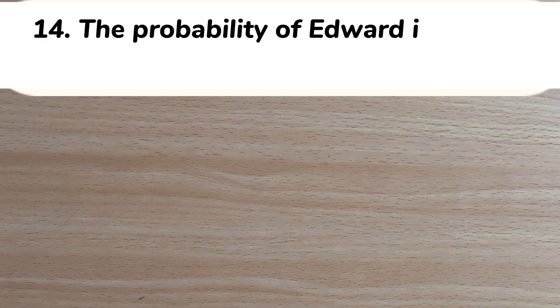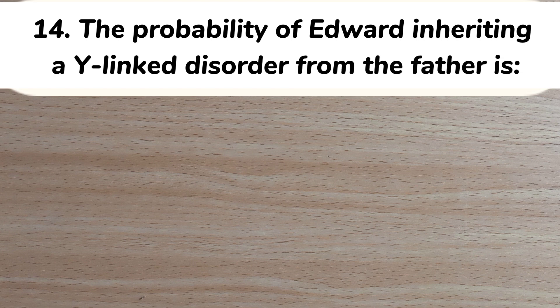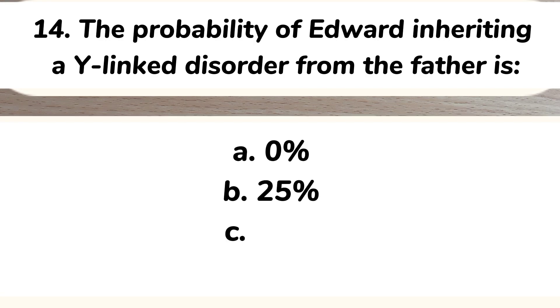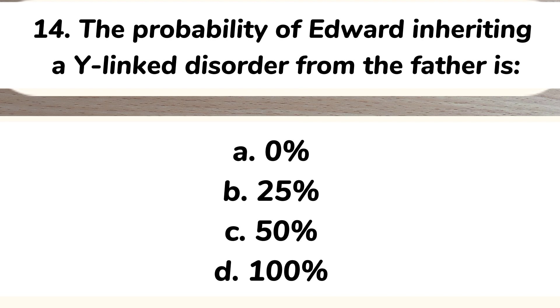Number fourteen: the probability of Edward inheriting a Y-linked disorder from his father is A) 0%, B) 25%, C) 50%, D) 100%. Answer: D) 100%.